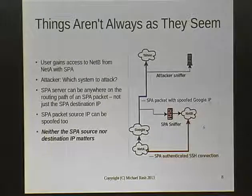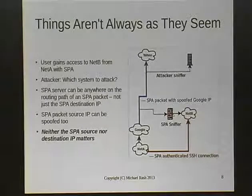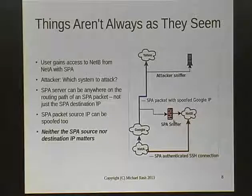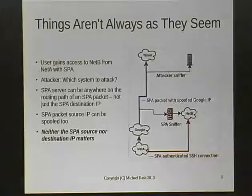In addition, the SPA sniffer does not even need to have an IP address assigned to the interface where it's sniffing, which means that the destination IP of the SPA packet is also totally meaningless. The only requirement is that the sniffer is on the routing path of an SPA packet as it traverses the network. So for the sake of argument, you could make it look like an IP owned by Google is communicating with an IP owned by Yahoo, sending this SPA data across the wire, and that results in a totally unrelated packet sniffer reconfiguring itself to allow you SSH access from your particular network.